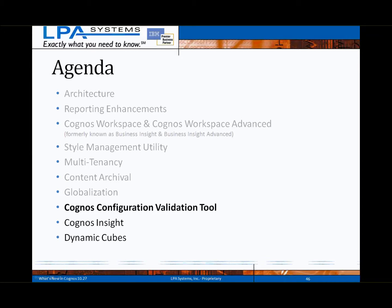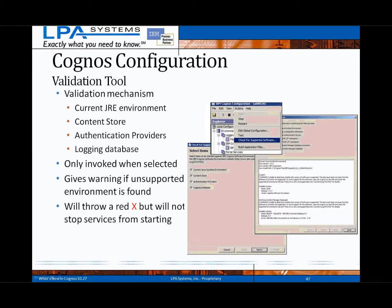A new tool has been added to Cognos Configuration to help validate the software versions within a customer's Cognos BI environment. This tool currently evaluates four areas when invoked by the administrator: the current JRE or Java environment, the content store database platform and version, authentication providers, and the logging database platform or version.